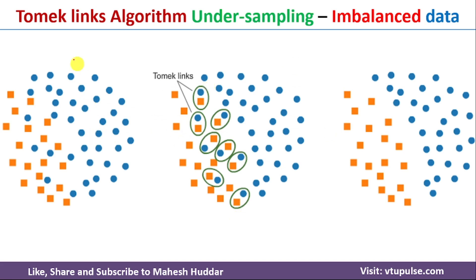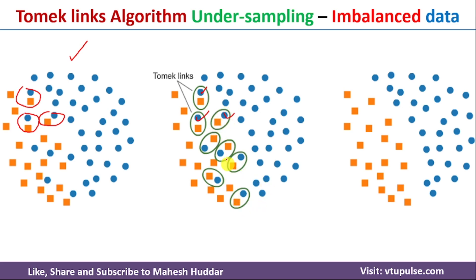This can be shown with a simple diagram. In the original diagram, the instances shown in blue are the majority class and those shown in orange are the minority class. From this dataset we identify pairs of examples that are close to each other and belong to different classes. Once these TomekLinks are identified, we remove the example from the majority class in each pair. This deletion is performed for all identified TomekLinks throughout the dataset.